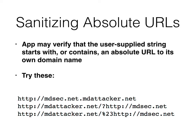The app may verify that the user-supplied string starts with the right URL. So you can try concealing it — put in the real URL, like httpmvsec.net, and then just keep going with .attacker.net. The app will find that this starts with the correct domain but won't notice there isn't a slash there. Phishers do this too — they put the name of the company followed by .evildomain.com and it looks like it's really going to that company.